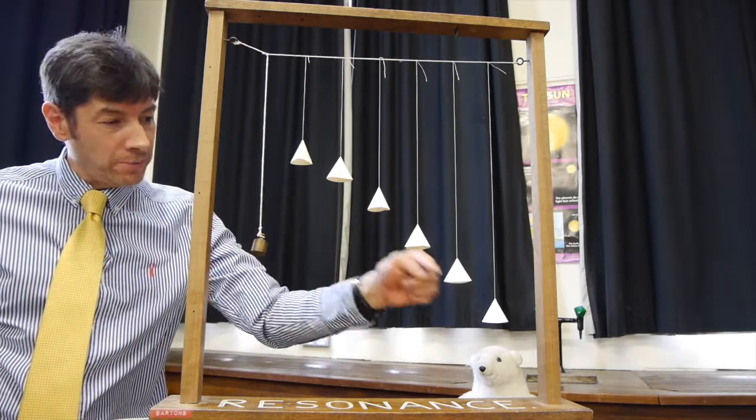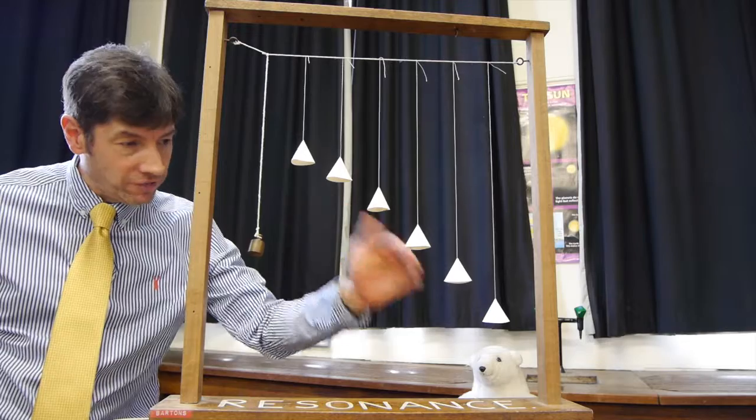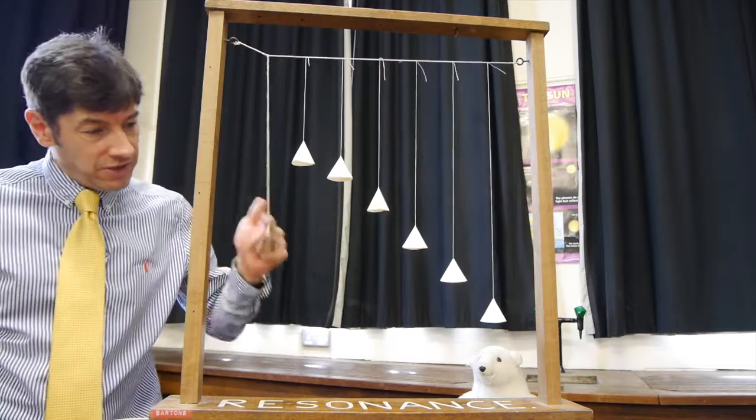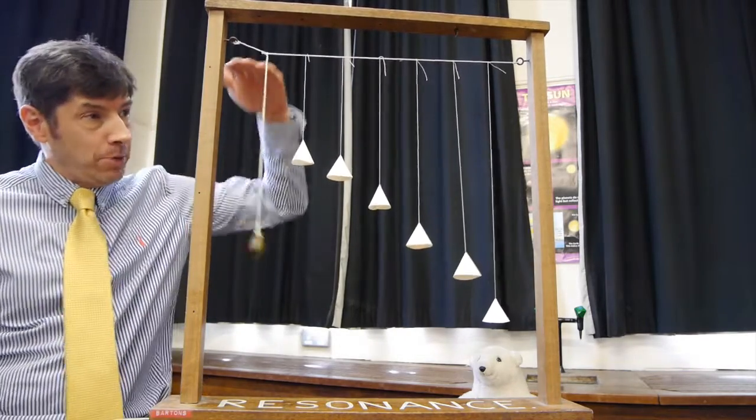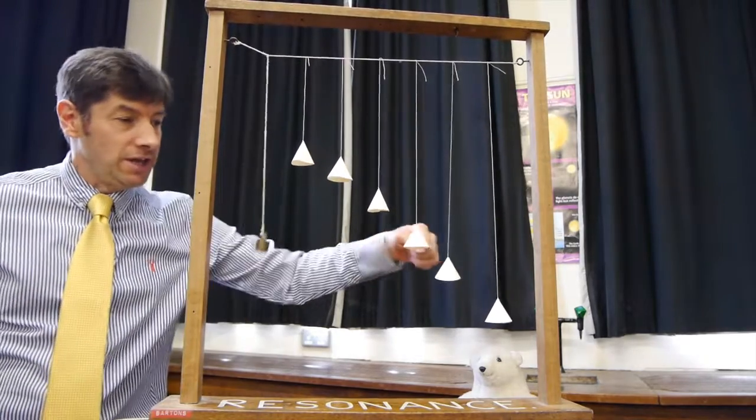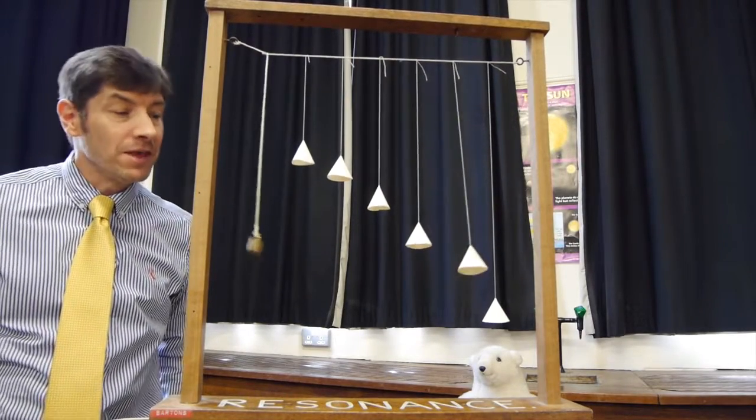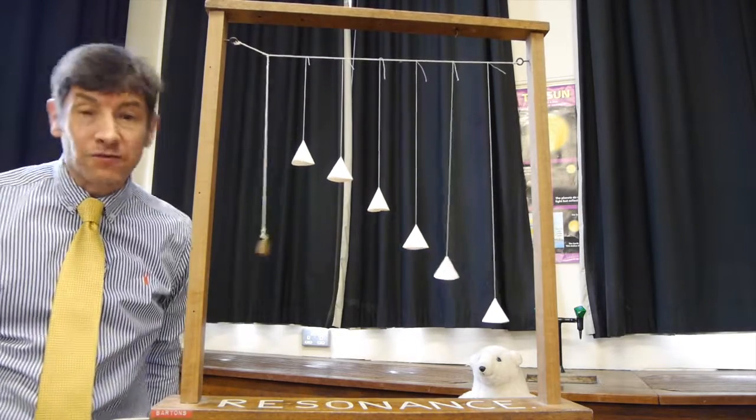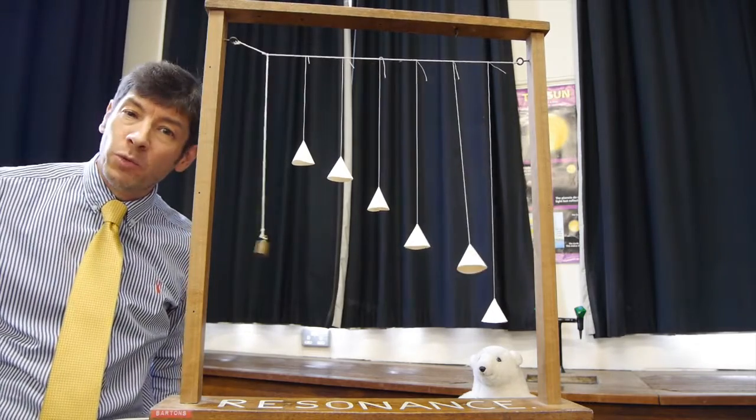So now we know that each one of the paper cones likes to swing at a different frequency. They've all got different natural frequencies. Let's start it again. And of course, this pendulum swinging, the driver with its energy, is imparting energy to the cones. But you'll notice the one that's gaining the most energy is the one that swings at the same frequency as it does. In other words, the natural frequency of this cone here is the same as the frequency of the driver. And that effect produces what we call resonance.